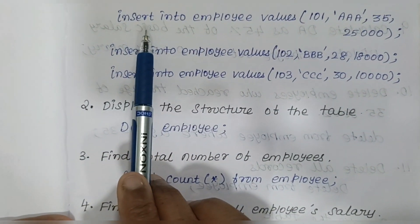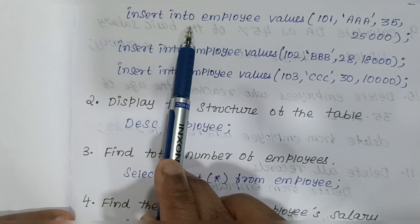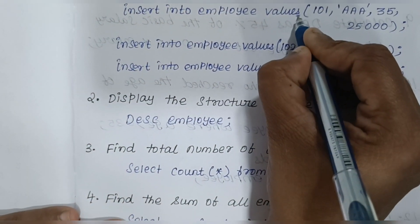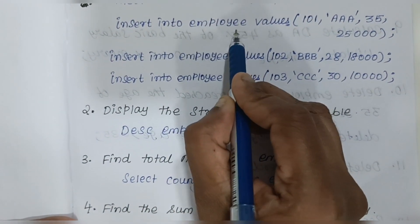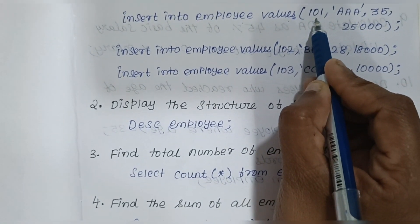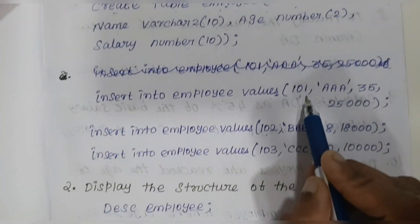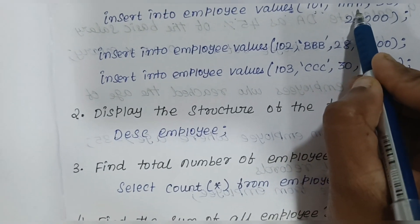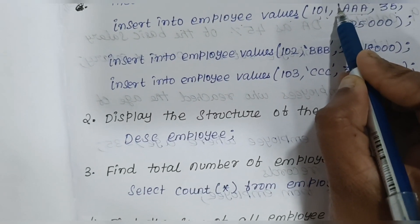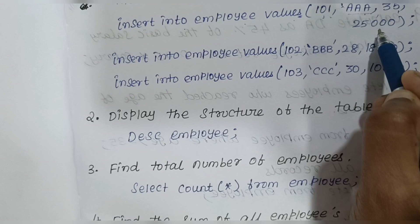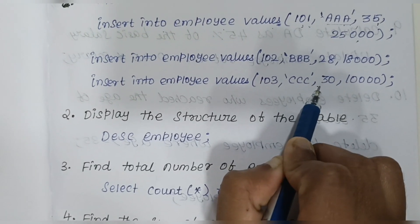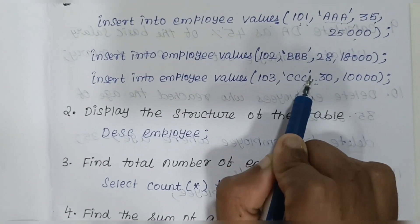The second question is to insert records into the table: INSERT INTO employee VALUES — make sure you write 'values' in its proper form and open the bracket. Look at the table: the first employee ID is 101, then name 'Aaa', then age 35. Wherever you have a string value, enclose it in single quotes. Then comma, and continue with age and salary. Three records are given, so you insert all three.